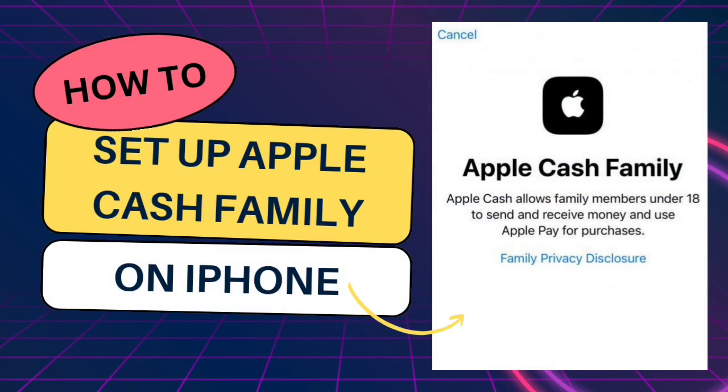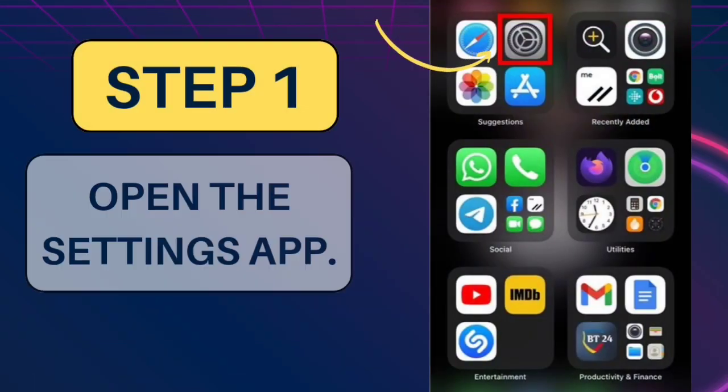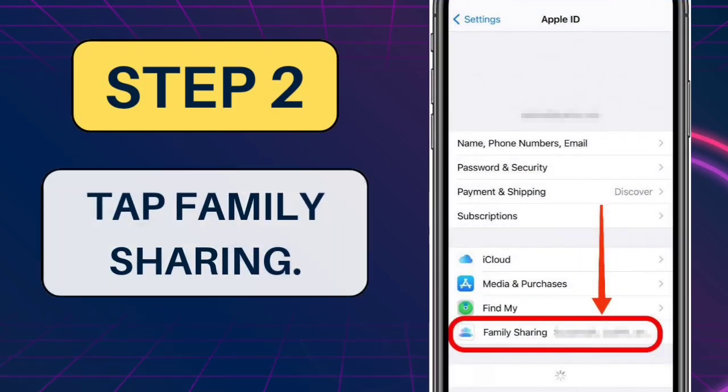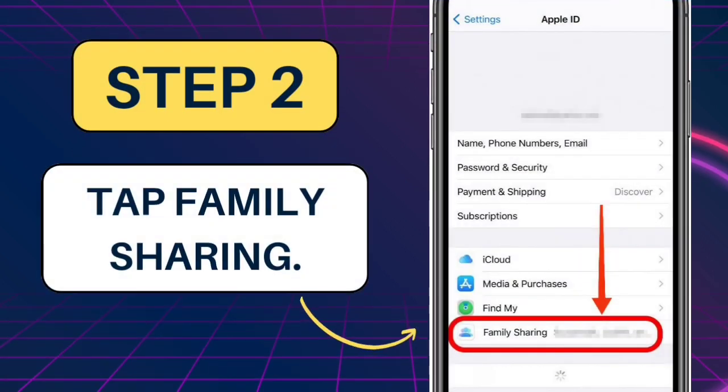How to set up Apple Cash Family on iPhone. Step 1: Open the Settings app. Step 2: Tap your name in the banner at the top, then tap Family Sharing.